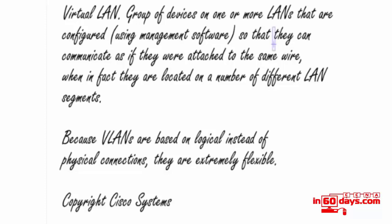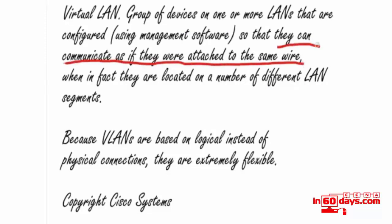The key concept is that devices on a VLAN can communicate as if they're attached to the same wire. All devices on the VLAN think they're basically attached to the same wire — they have no knowledge that they are part of a VLAN, and that's a good thing. We don't want any more complexity than we need. You can have a number of different devices on the same VLAN spanning multiple switches and even multiple buildings, depending on how your network is set up.